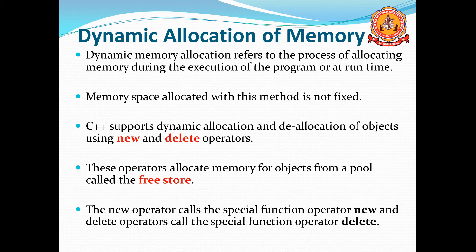Next is dynamic memory allocation — this is an important one. Dynamic memory allocation refers to the process of allocating the memory during the execution of the program, or at run time. Static means allocating memory at compilation; here memory is allocated during execution of the program. Memory space allocated with this method is not fixed — in static the memory space is fixed, two bytes means two bytes, but here it may change.